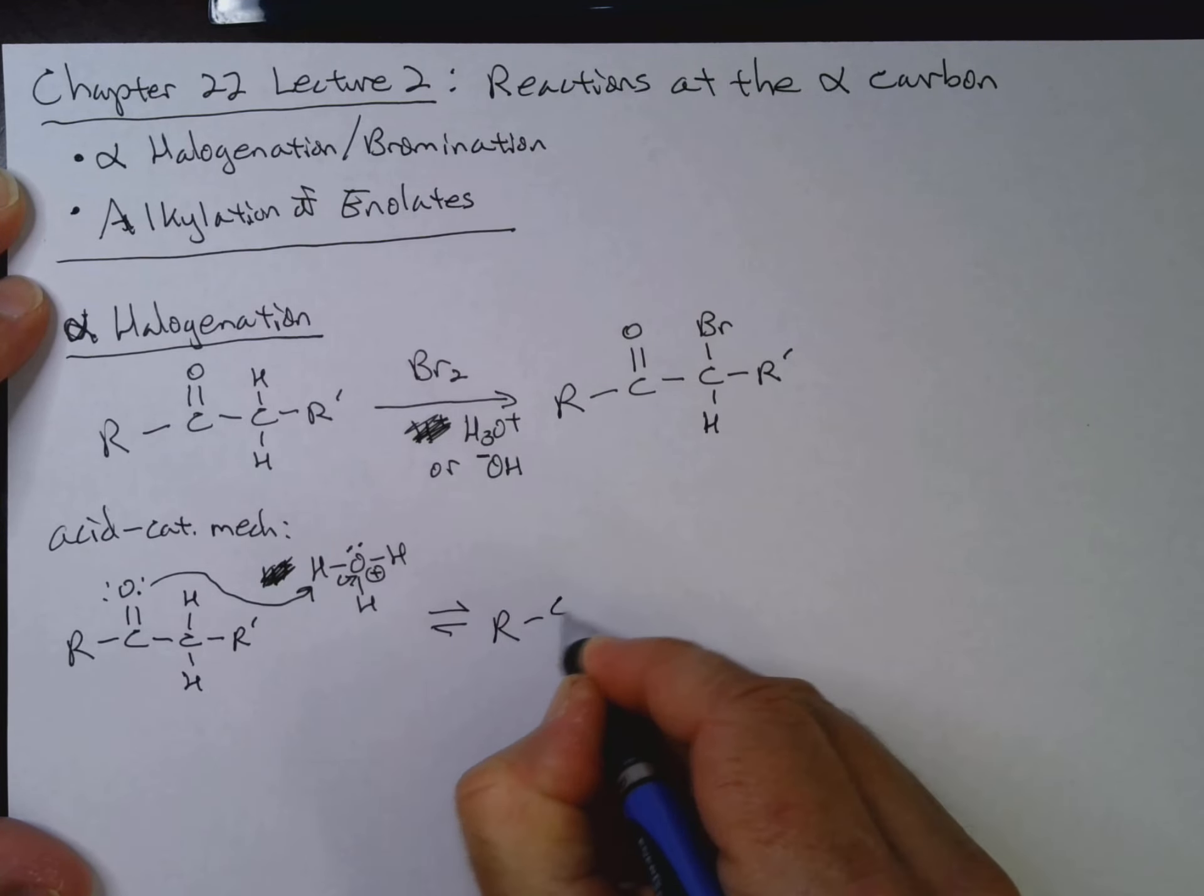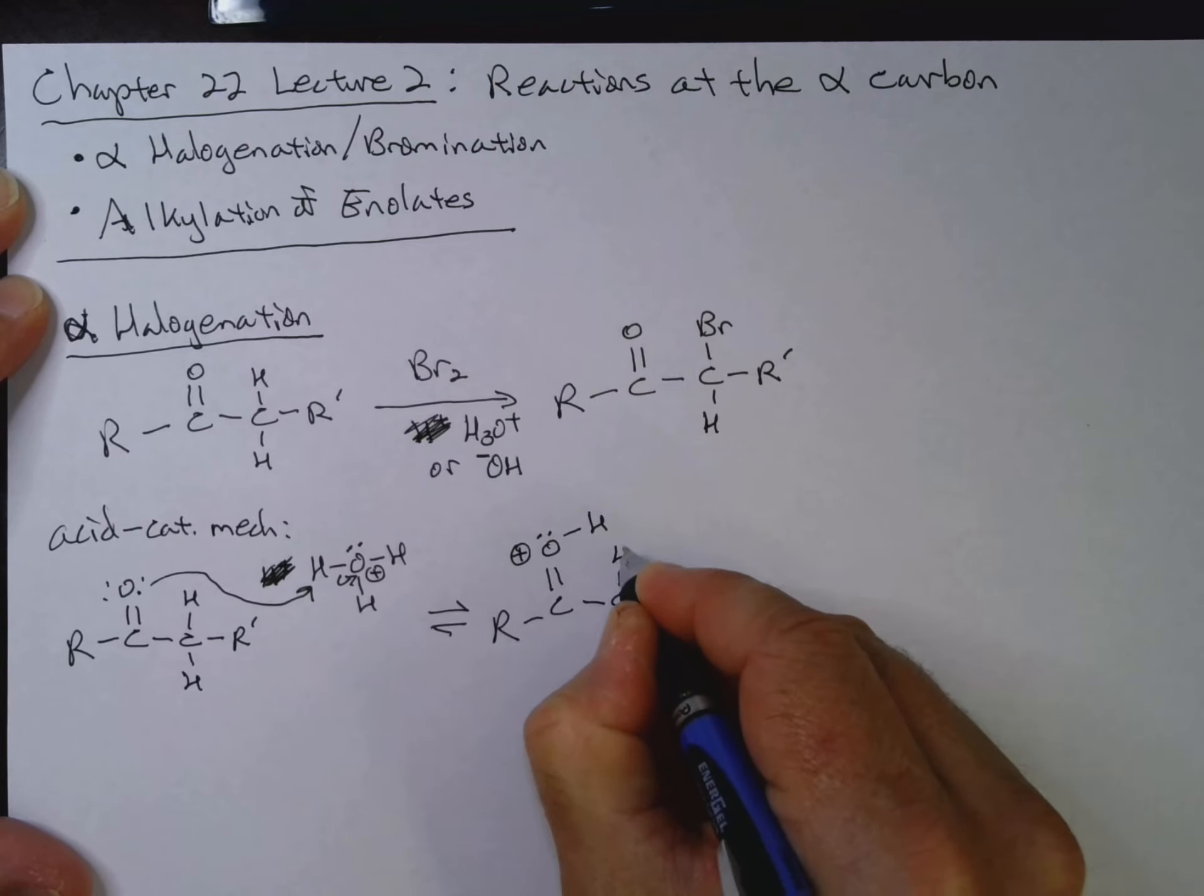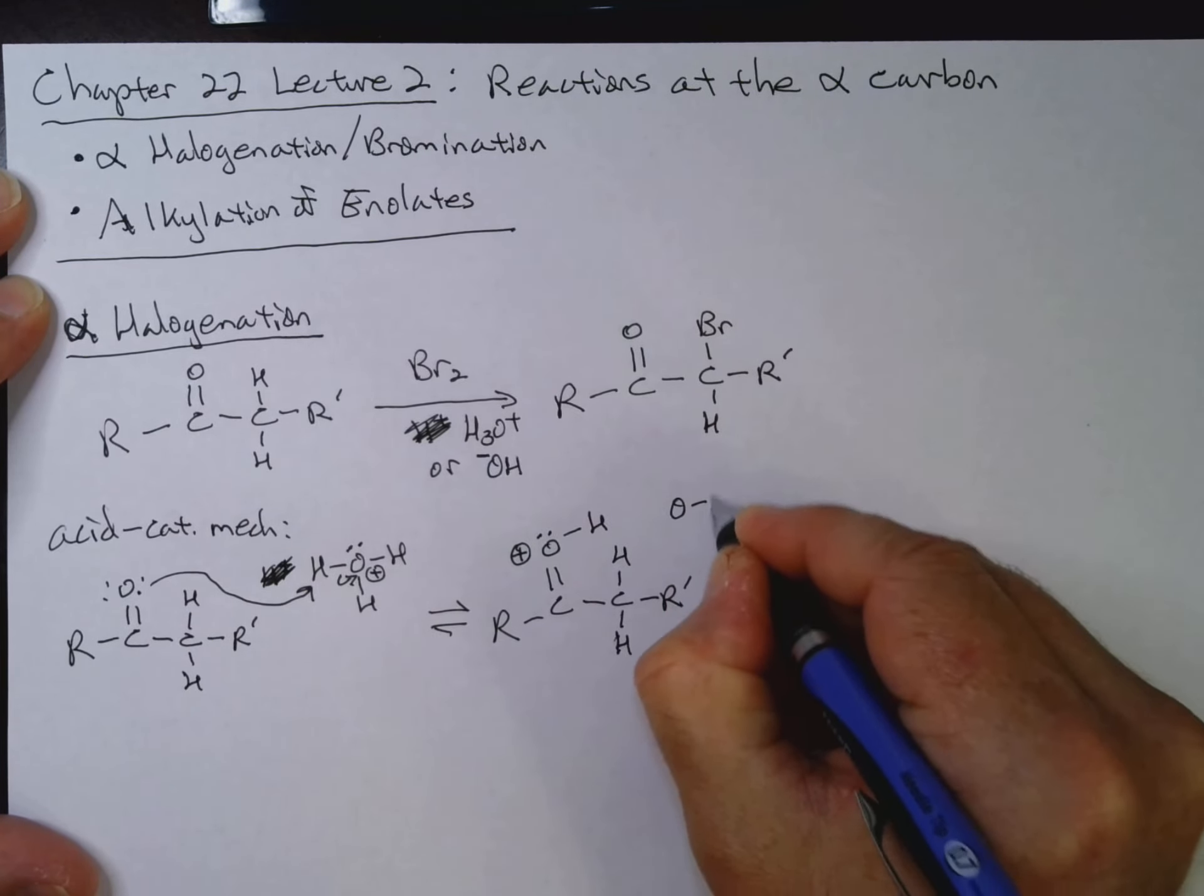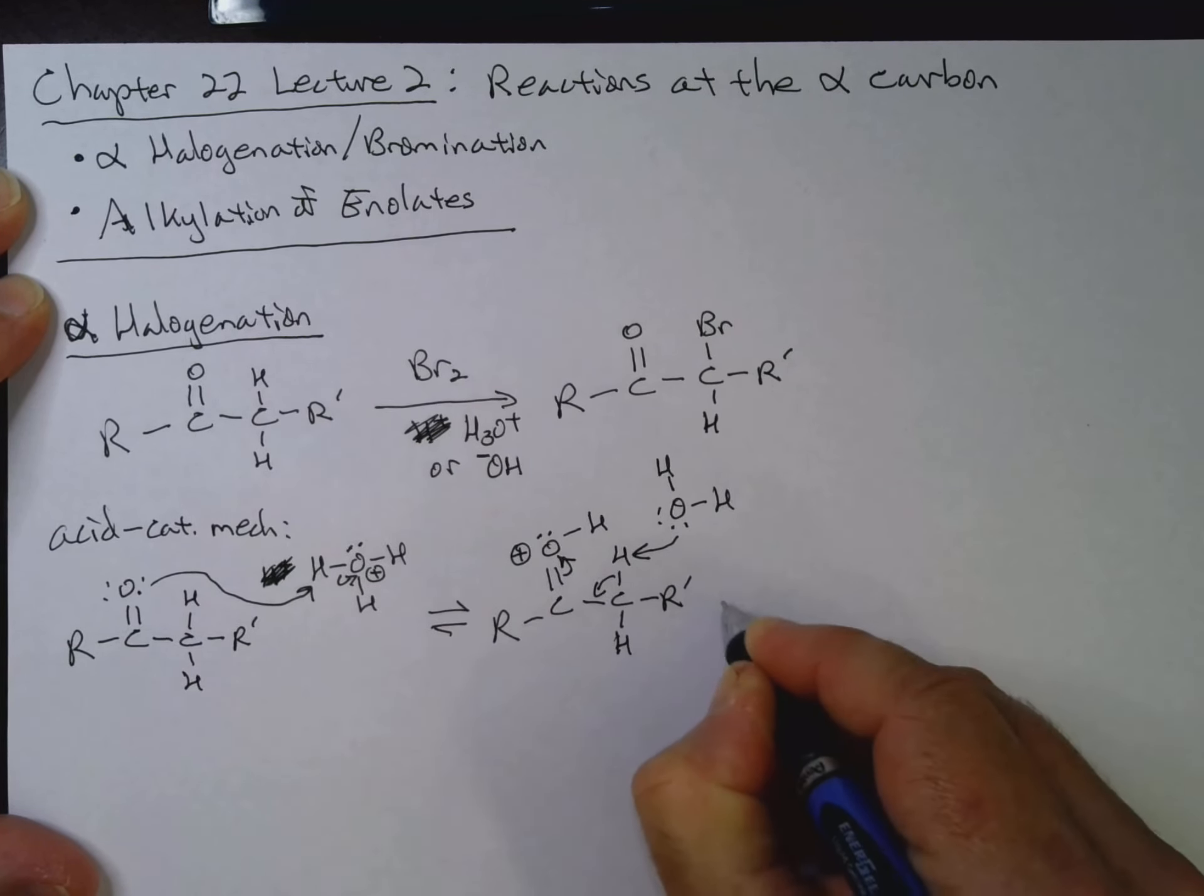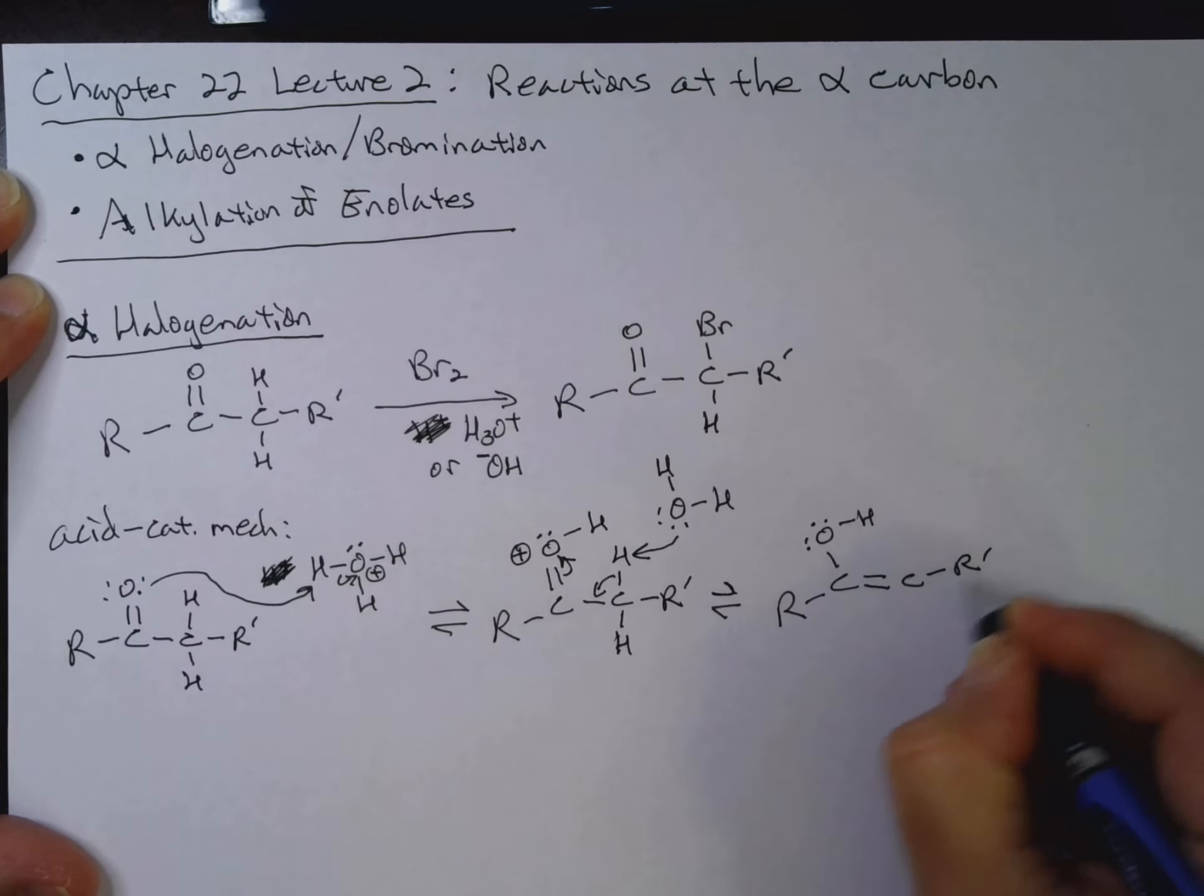Now we'll get R, C, double bond O, H, positive charge, C, H, H, H, R prime. And next we'll go ahead and our water then can come in and pull off that hydrogen. And this gives us our enol. So when we're in acid, our first couple of steps are going to involve formation of the enol.